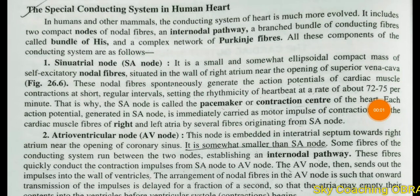The spatial conducting system in the human heart. In humans and other mammals, the conducting system of the heart is much more evolved. It includes two compact nodes of nodal fibers and inter-nodal pathways, a branched bundle of conducting fibers called the bundle of His, and a complex network of Purkinje fibers.